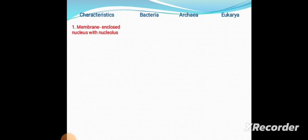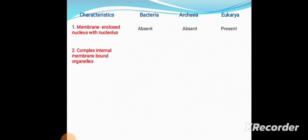First is the membrane-enclosed nucleus with nucleolus. It is absent in Bacteria, also absent in Archaea, but present in Eukarya.